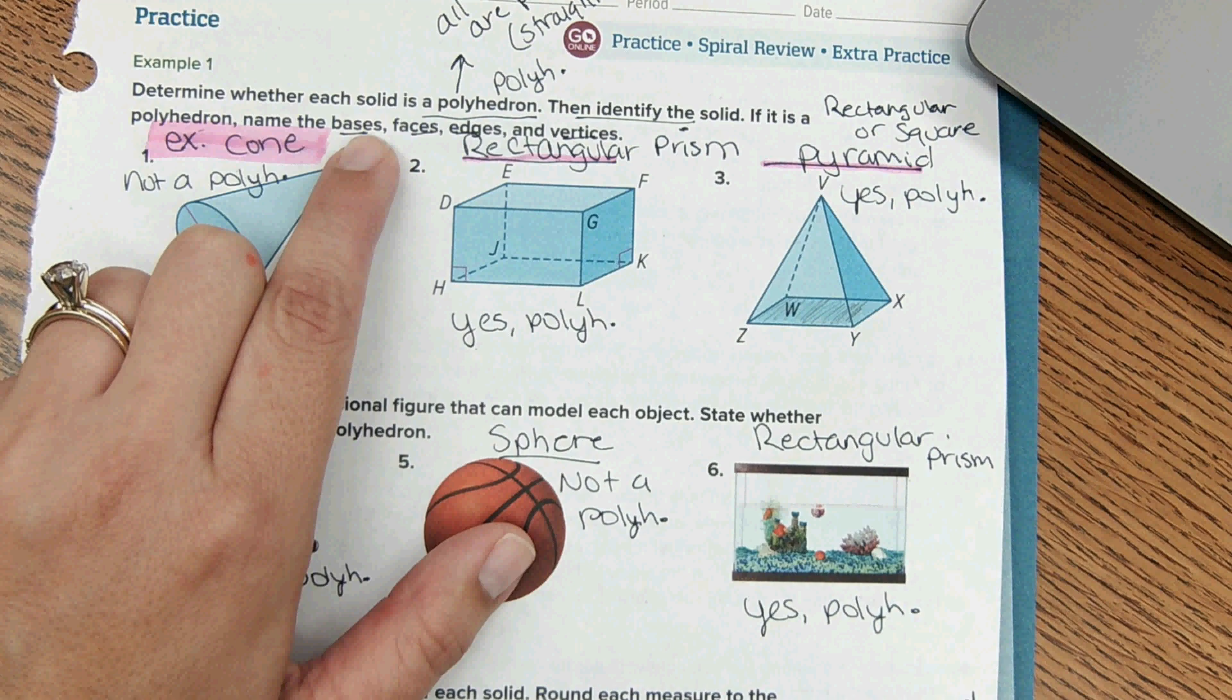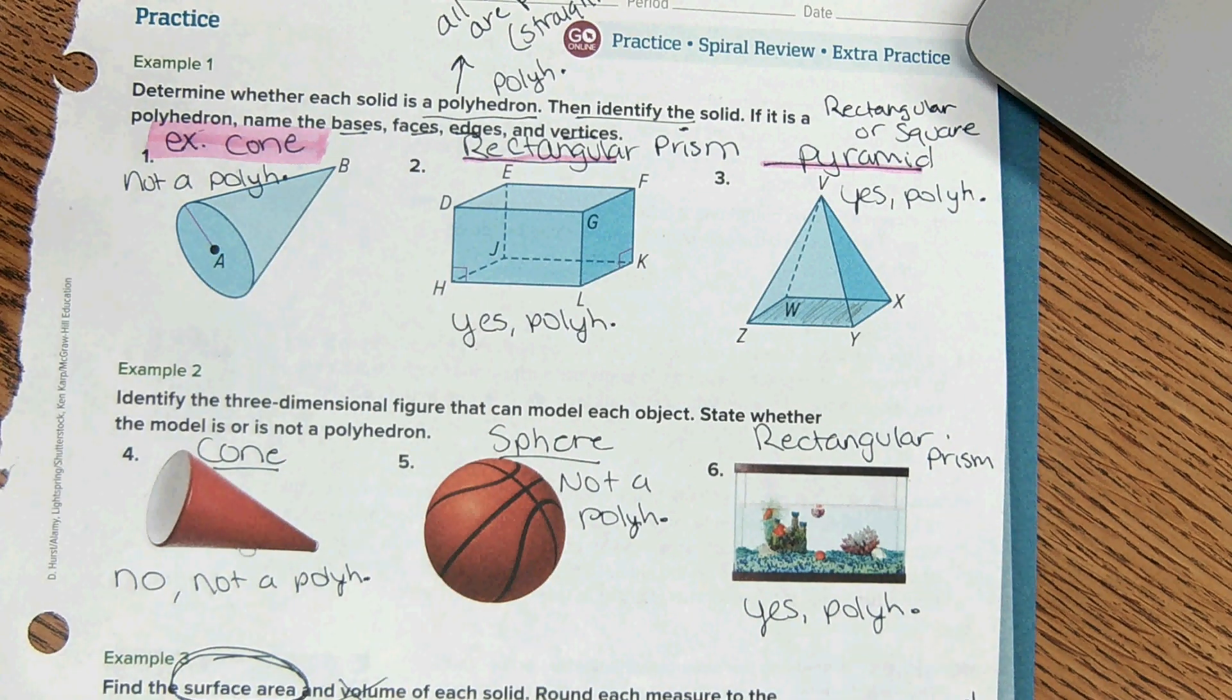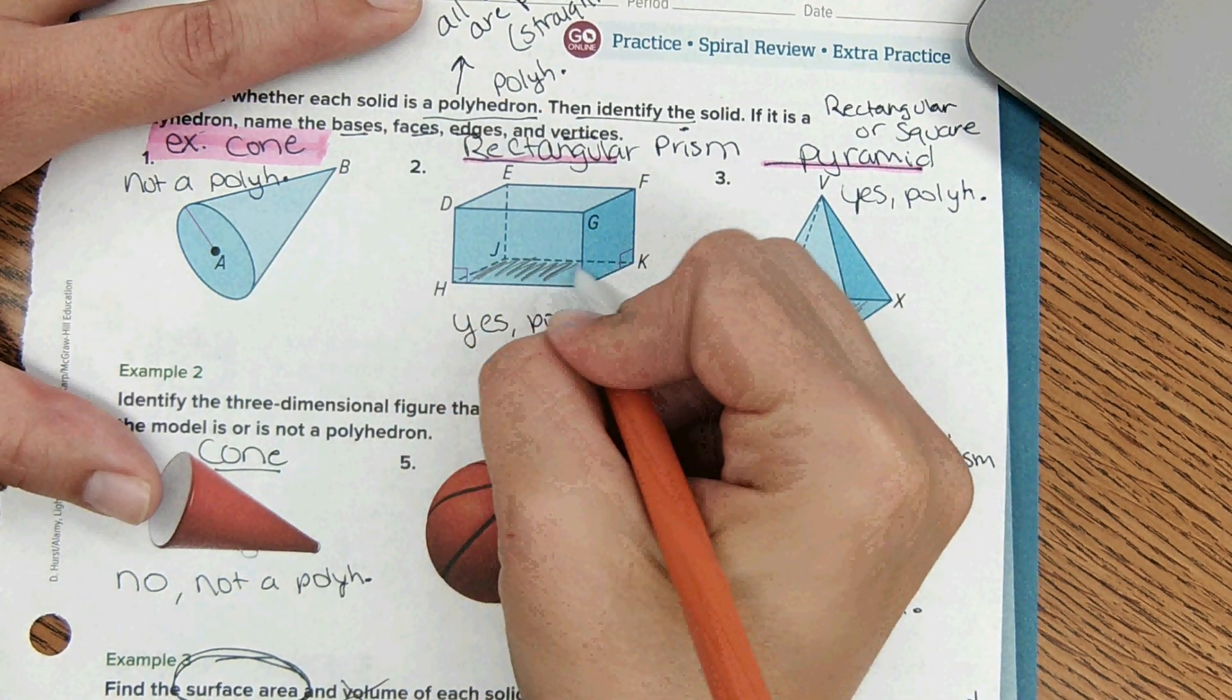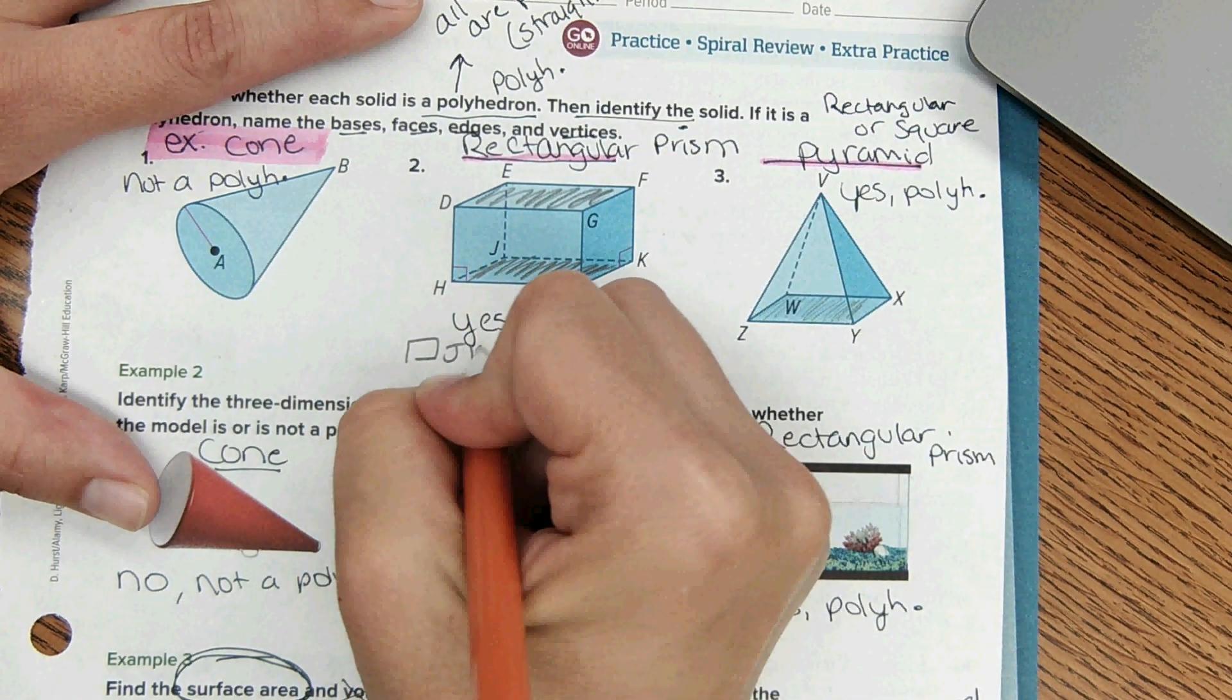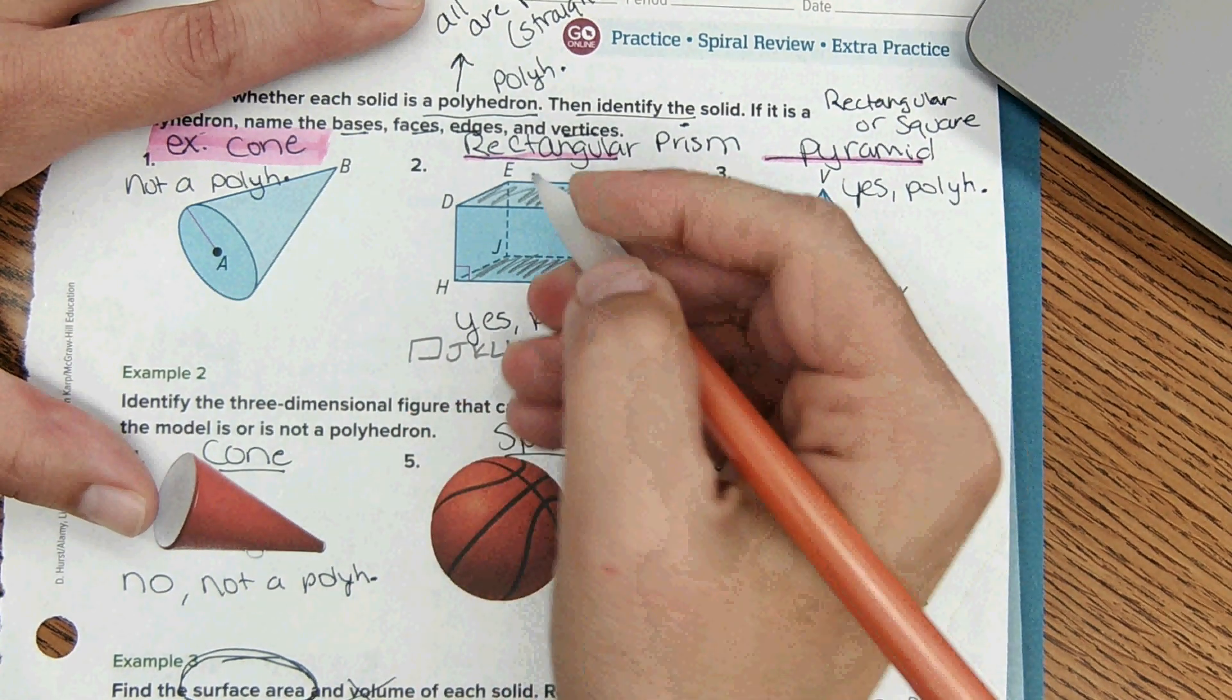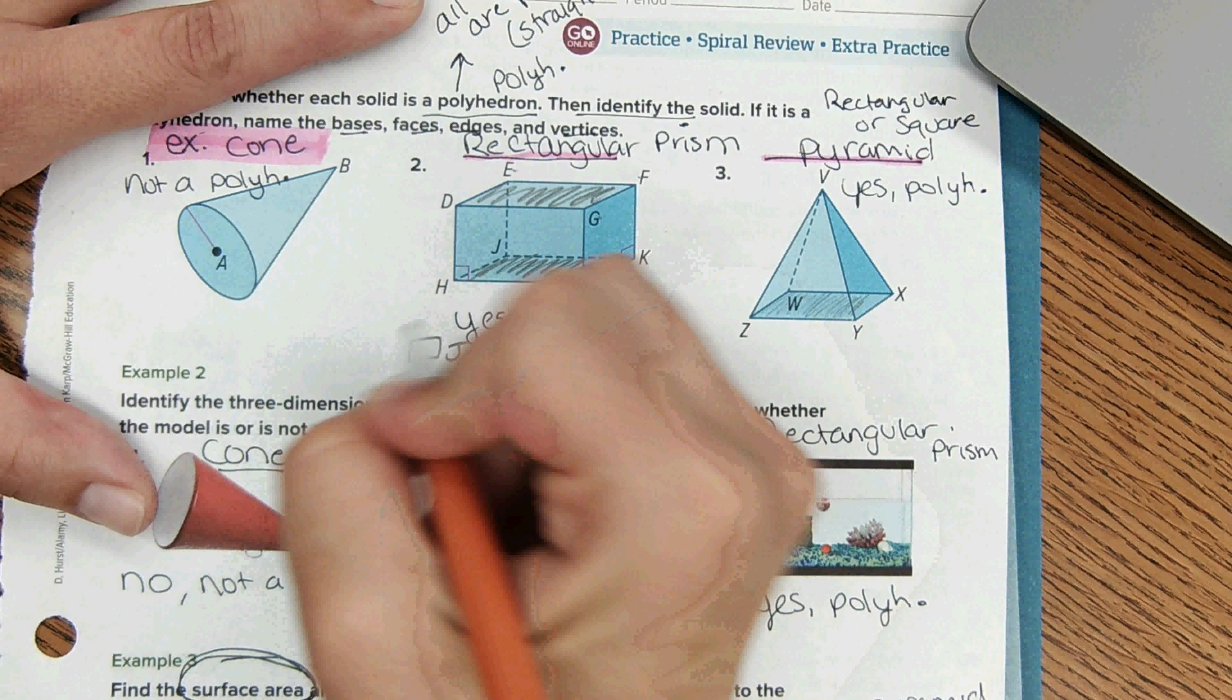So we're going to quickly identify the bases, faces, edges, and vertices of these shapes. The bases on this shape - this would be a base and then this would be a base. So we have rectangle J-K-L-H and rectangle E-F-G-D. That would be the bases.